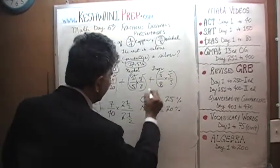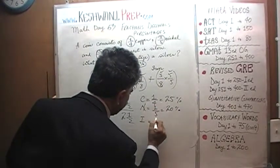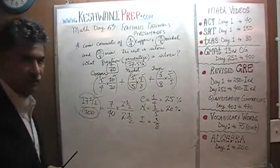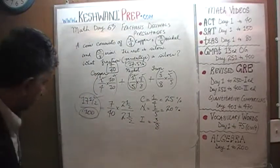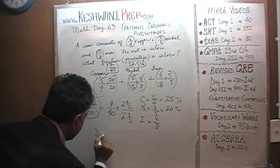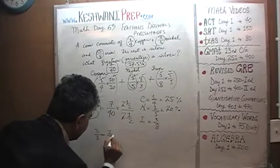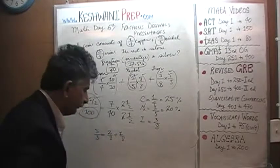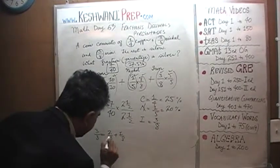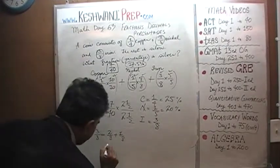How about 3/8? 3/8 is iron. How much is 3/8? Let's do it here. 3/8 is the same as 2/8 plus 1/8. 2/8 is just a quarter, which is 25%.